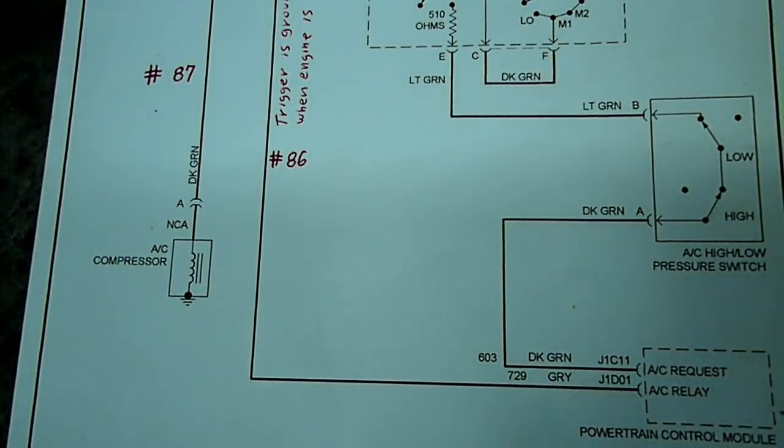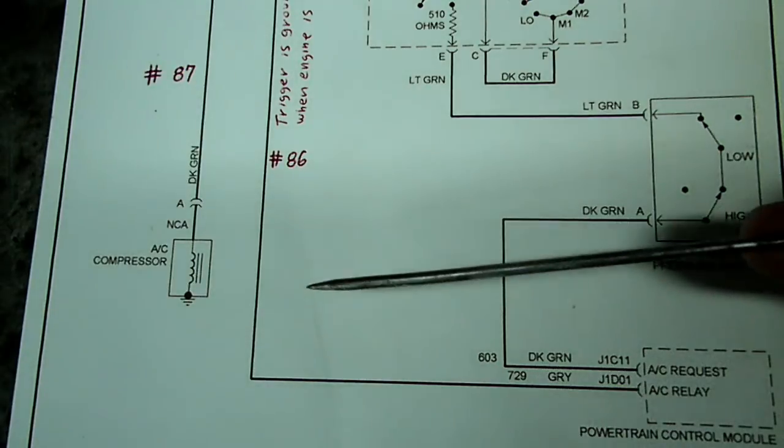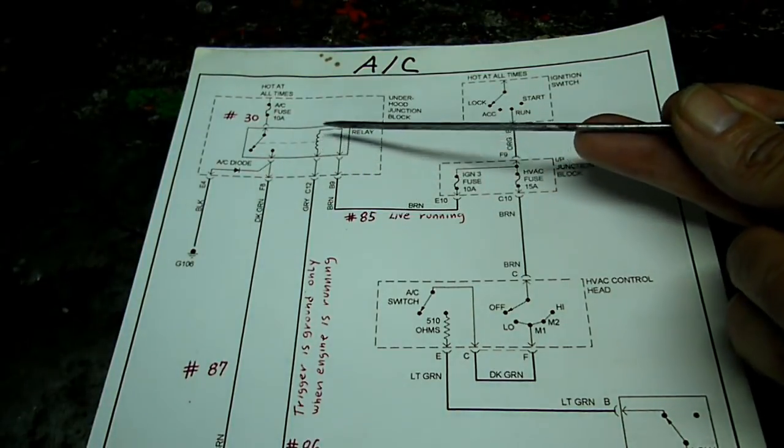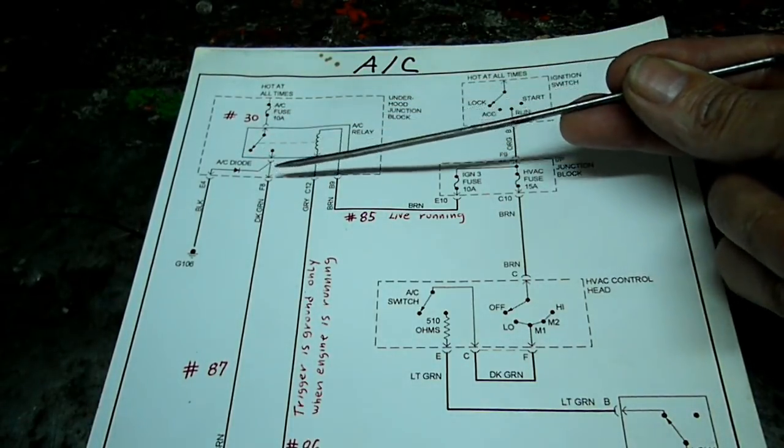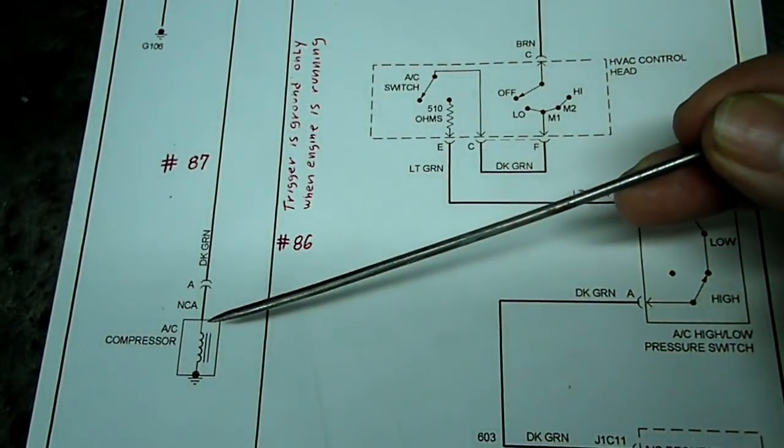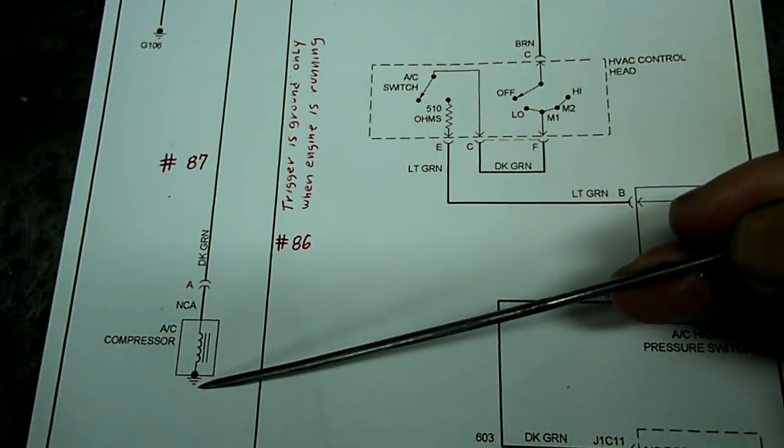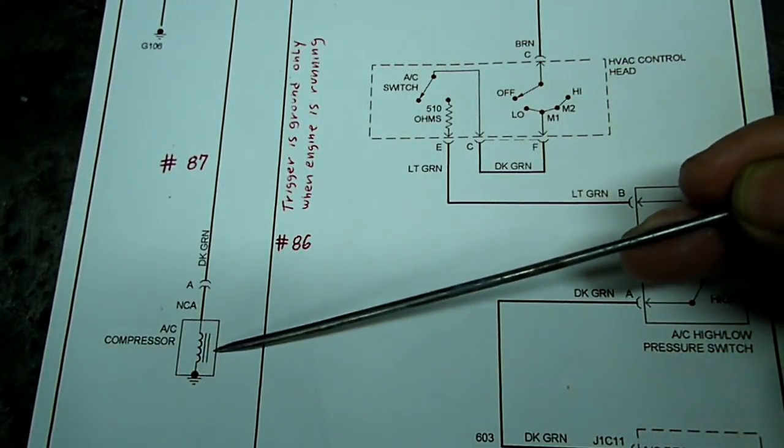And then it will go into the computer. The computer says oh, you want the AC on? Great. I will send a signal to your relay. So it sends a ground signal up this wire. Energize the coil right here of the relay, pulls it closed. Voltage flows down the wire to the AC compressor clutch. Engages it. You can see right here it has a symbol of a ground right here, showing that the compressor is grounded at the motor.